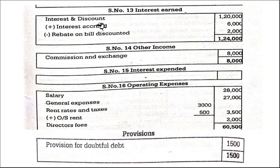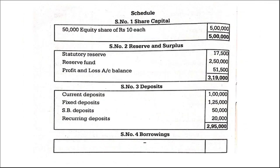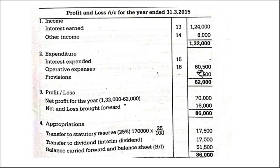After finishing this, first write Schedule 13, 14, 15, 16 and provisions, then you can prepare the profit and loss account. Schedule 13 and Schedule 14 — interest earned and other income — total 1,32,000. Interest expended, operating expenses, provisions — total expenses 62,000. Net profit for the year: 1,32,000 minus 62,000 = 70,000.